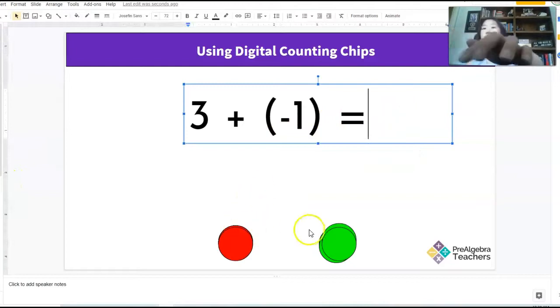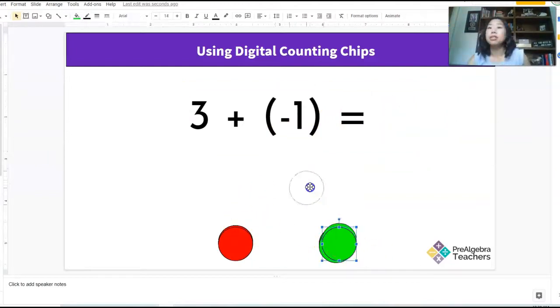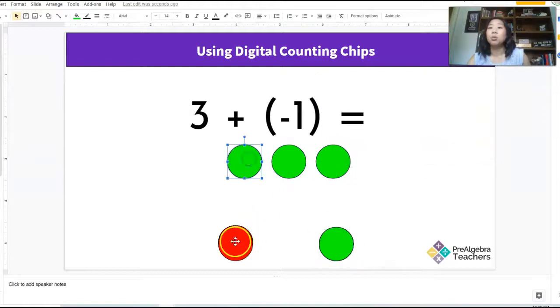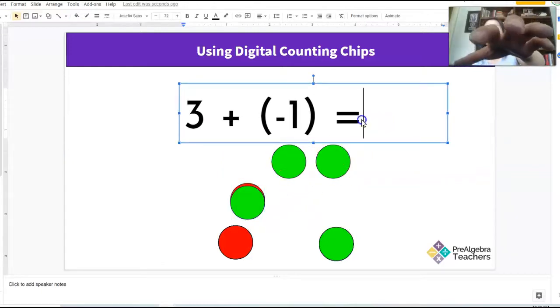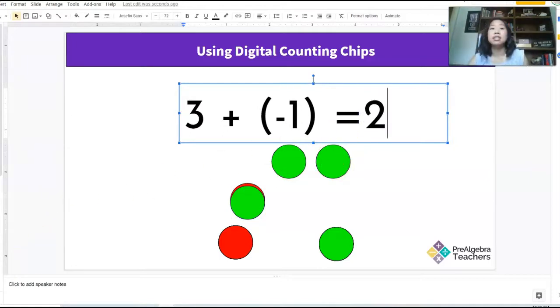Okay. Next, I have three positives. One, two, and three, and one negative. Do any of these zero out? Yes, right here. So what do you have left? One, two. Two positives. So the answer is two.